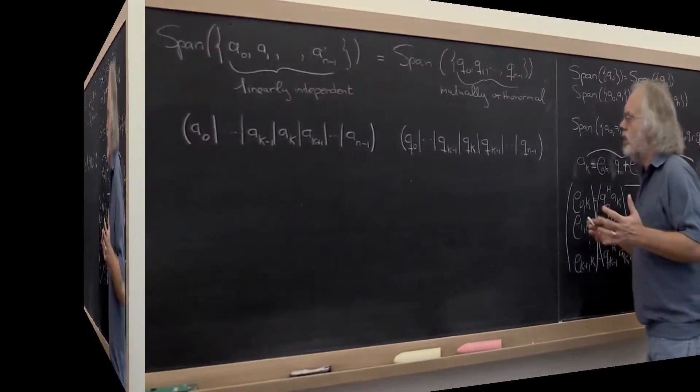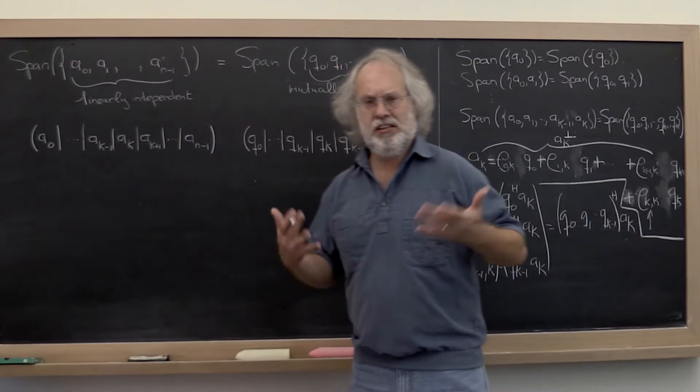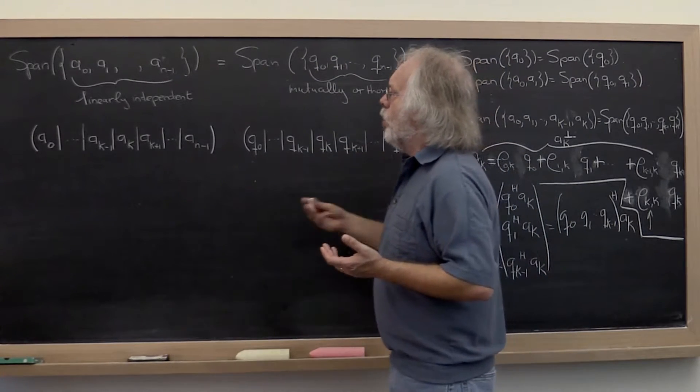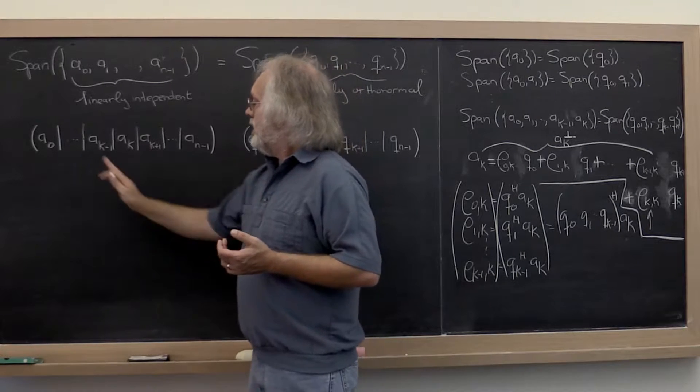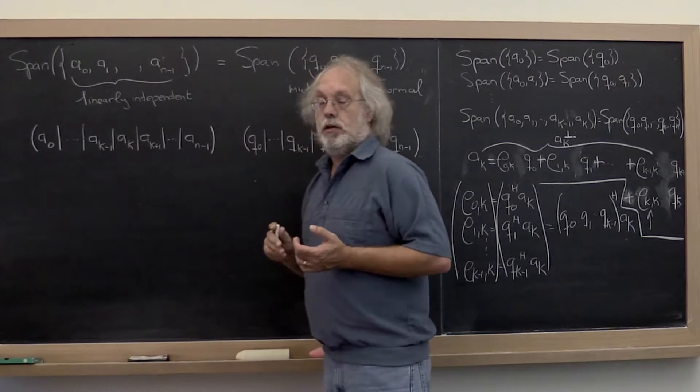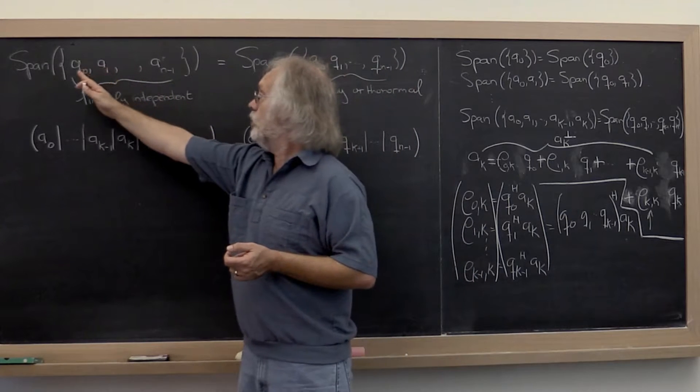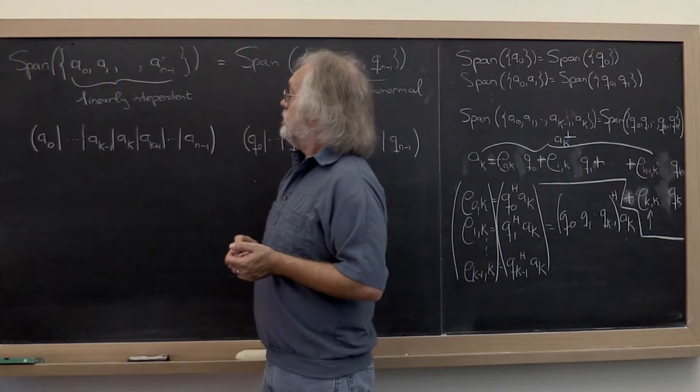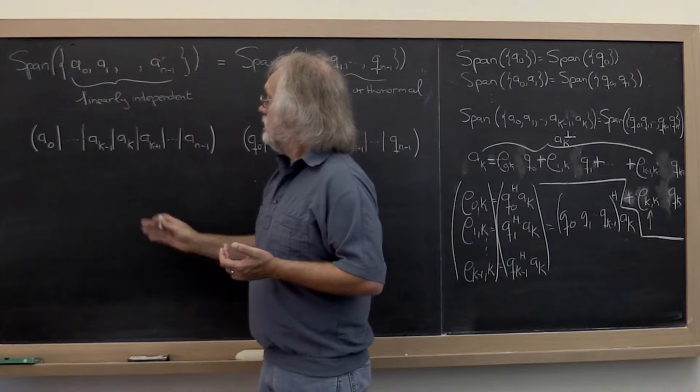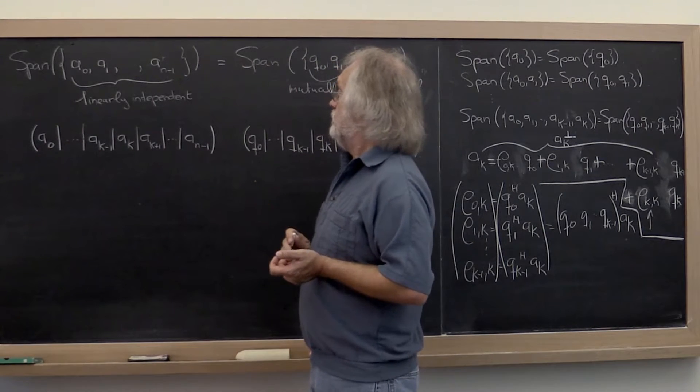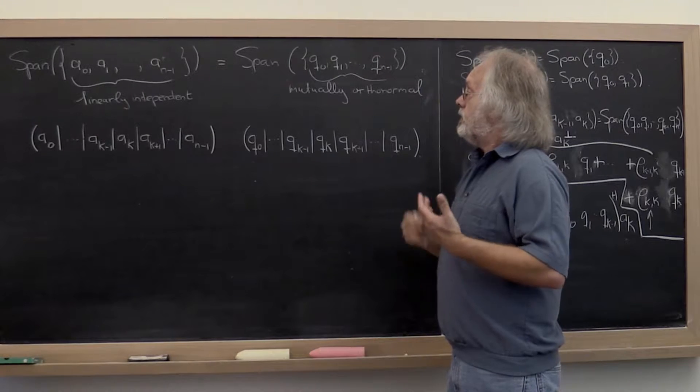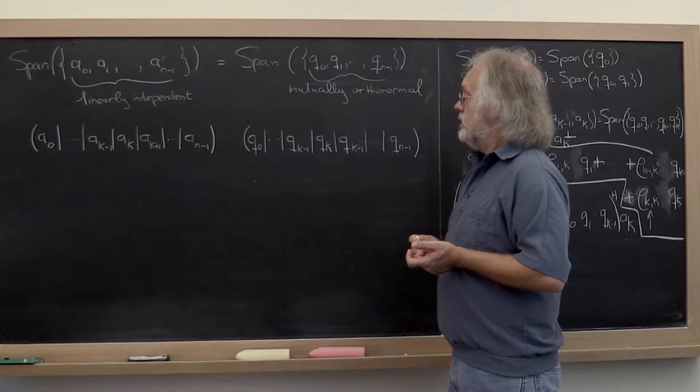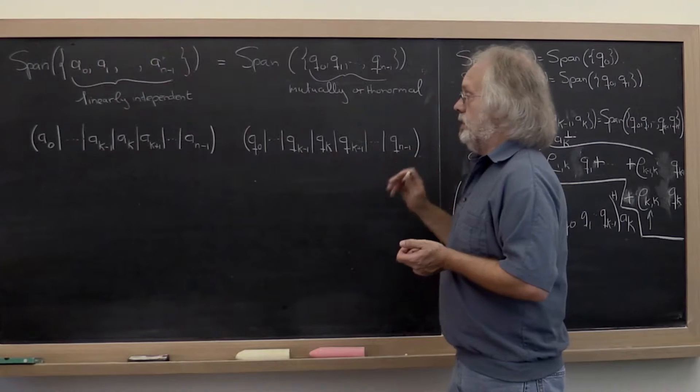And how does that go? Well, as you've seen a number of times already, we like to take vectors and make them into the columns of matrices. So here I've taken all of these vectors that we started with that were linearly independent, I've placed them into a matrix. And similarly, I've taken the vectors that become the orthonormal basis and I've placed them into a matrix.